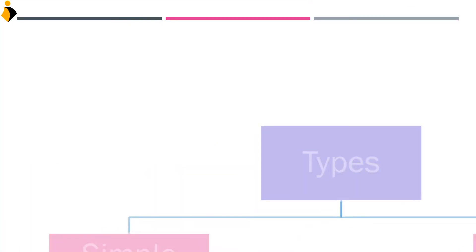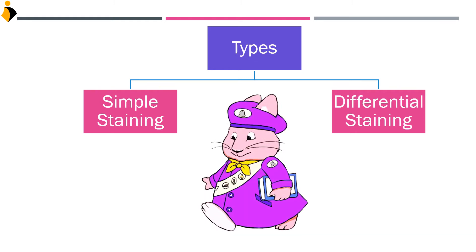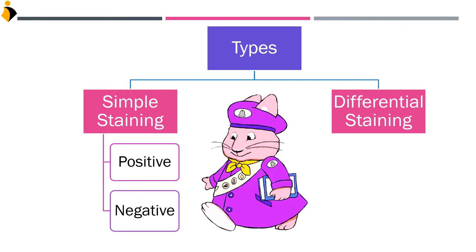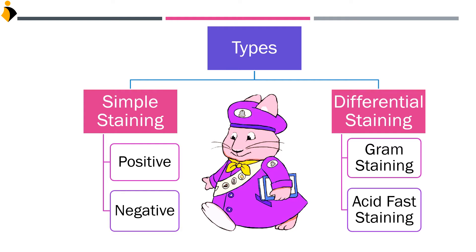There are two types of staining: simple staining and differential staining. With simple staining, the stain can be positively charged, negatively charged, or neutral, giving two subclassifications: positive staining and negative staining. In differential staining, the most important and famous types are gram staining and acid-fast staining. Gram staining will be studied today, and acid-fast staining in detail will be covered in the next session. In today's session, we are going to cover only simple staining in detail.